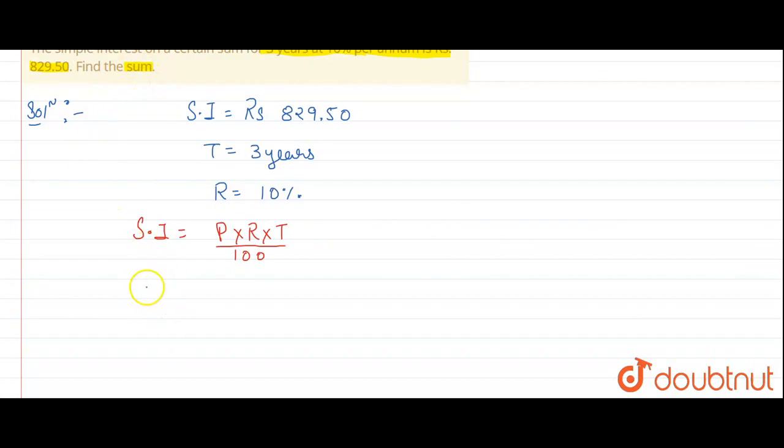So, SI is 82,950. What is P? P is what we will find. So we write P multiplied by R which is 10, multiplied by T which is 3, divided by 100.